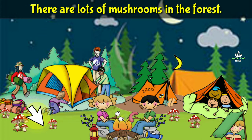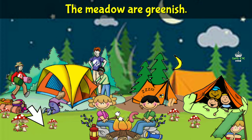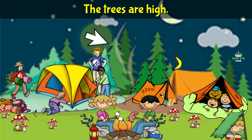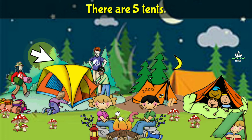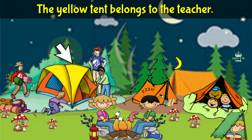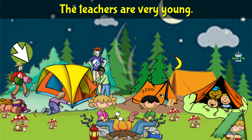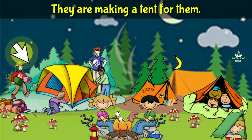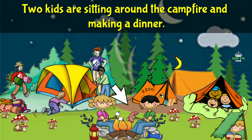There are lots of mushrooms in the forest. The meadow is greenish. The trees are high. There are five tents. There are 11 members in the camping. The yellow tent belongs to the teacher. The teachers are very young. They are making a tent for them.